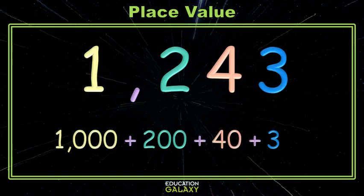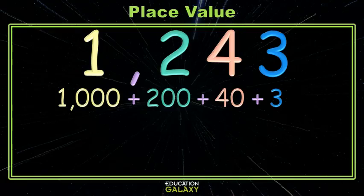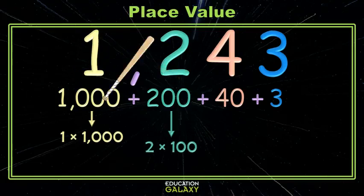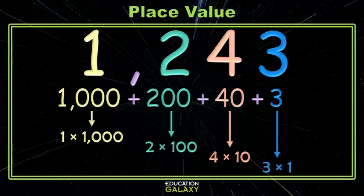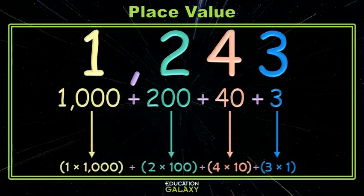And if you're wondering if we could break these values down a little bit more, well, you're in luck — we can. We can break them down into the products of their place value. For instance, 1,000 is really just one group of 1,000, or 1 times 1,000. 200 is two groups of 100, or 2 times 100. Can you guess what the next one is? Four groups of 10 is 4 times 10, and three ones is just 3 times 1. And we can write that as a sum. This is called expanded notation.